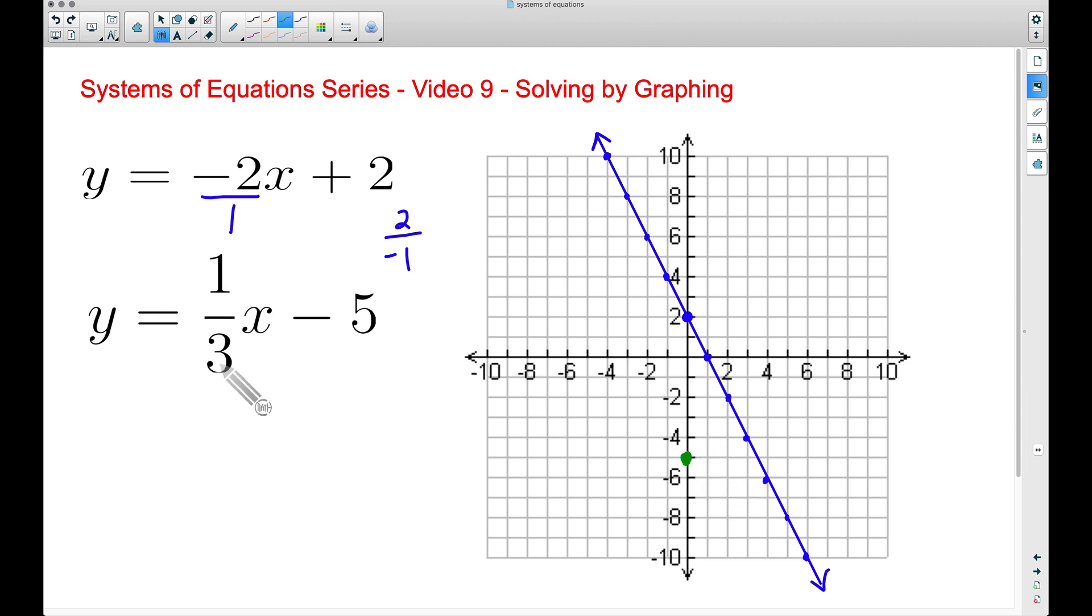Our slope is a positive 1 third, which implies we can go up 1, since we have a positive 1 and to the right 3, since we have a positive 3 at the bottom. Well check this out. Up 1, right 3. Bam! There is our solution right there.